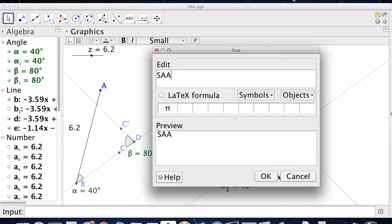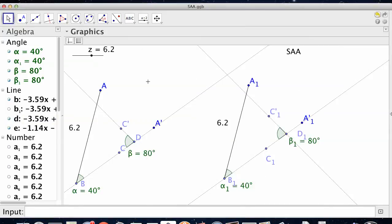So we've got a 6.2, we've got a 40, we've got an 80. Well, these triangles have to go from B to D to A, B1 to D1 to A1, and A and A1 have to show up on this line. So let's make them and see.